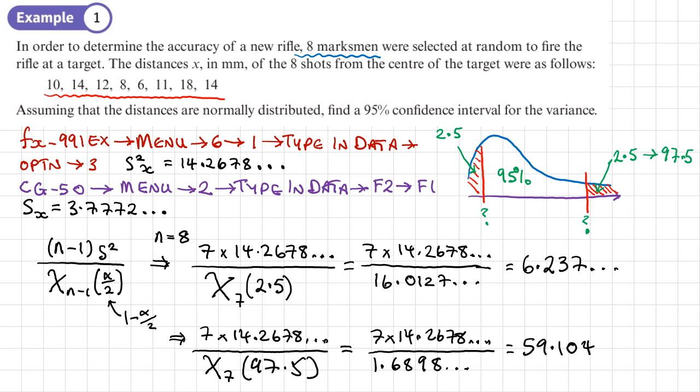Obviously, if you use the percentage points tables, you're going to get slightly different values, but the mark schemes will allow for a certain range of values. I want to give it as a confidence interval. So, it's going to be (6.237, 59.104). Let's highlight that as our final answer, and then we'll move on to the next question.